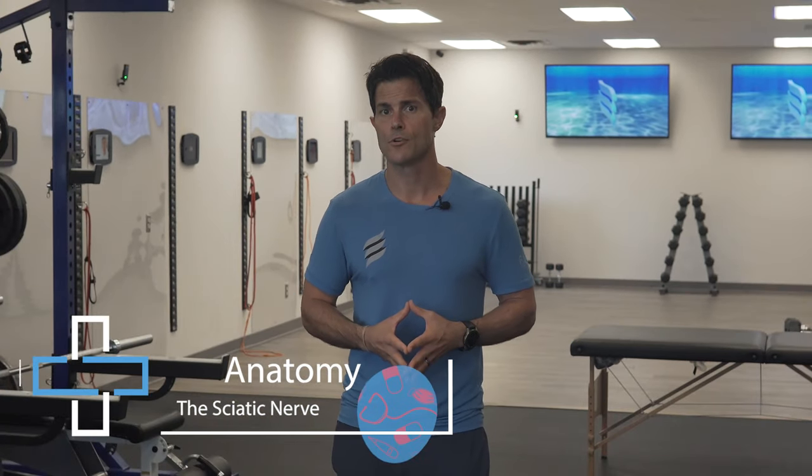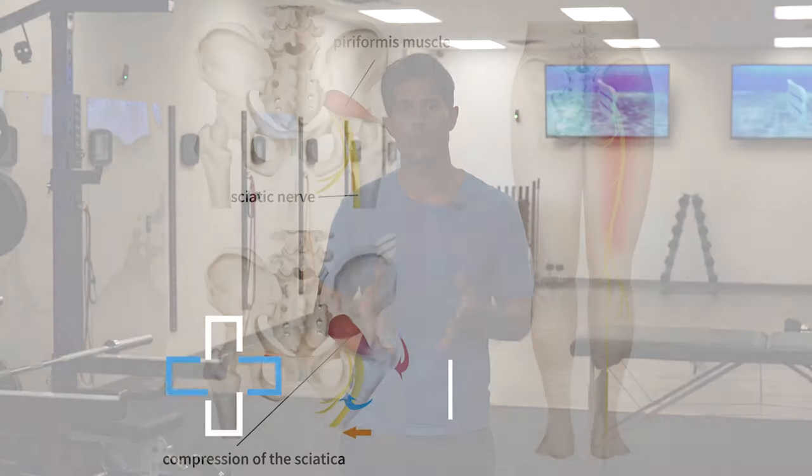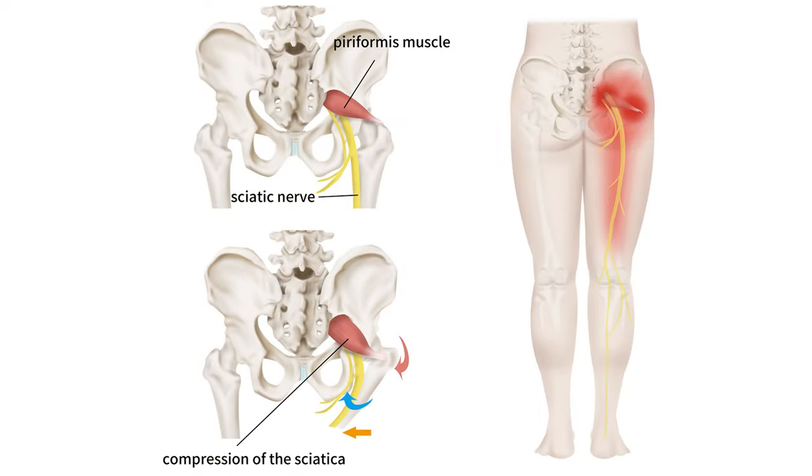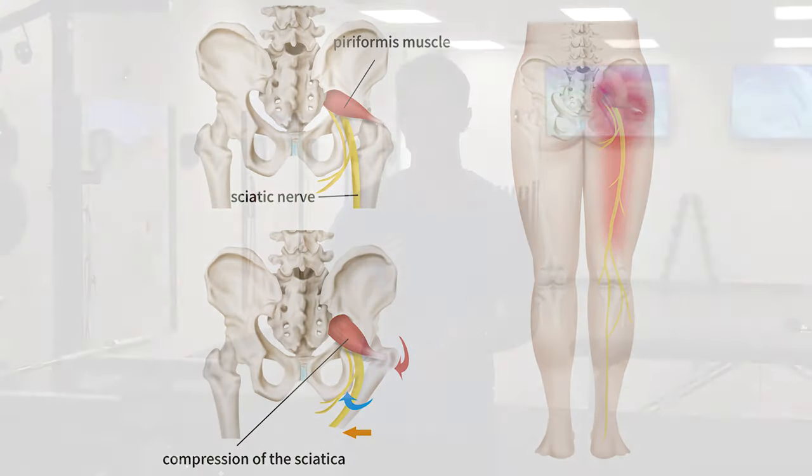The sciatic nerve is the largest nerve in the body. It's derived from the nerve roots of the lower lumbar and sacral region of the spine. After forming from the nerve roots, it travels underneath or through — in about 20% of the population — the piriformis muscle, down the back of the thigh before it branches out at the back of the knee into separate nerves, which then travel down into the lower leg and foot. Due to its large size and many branches, it provides muscle and sensory function to many of the muscles in the lower extremity.